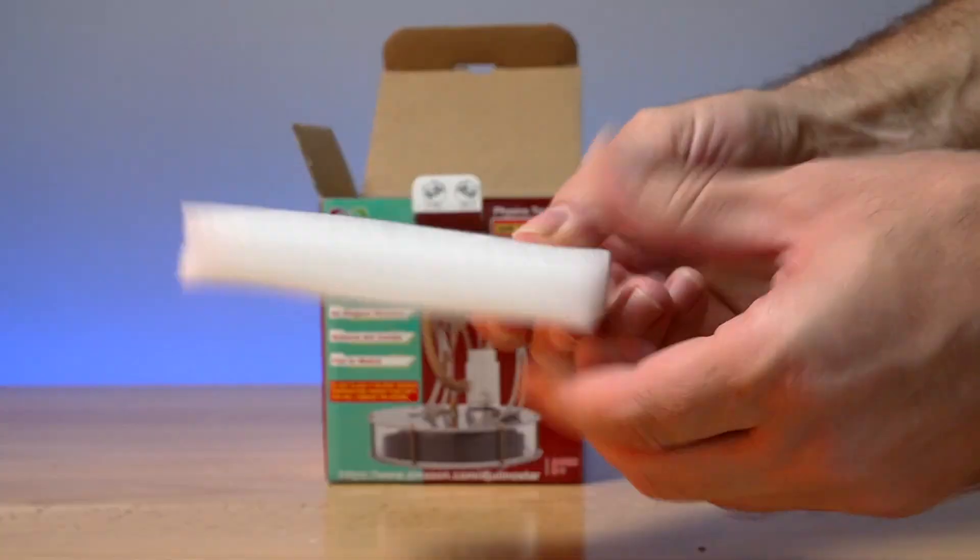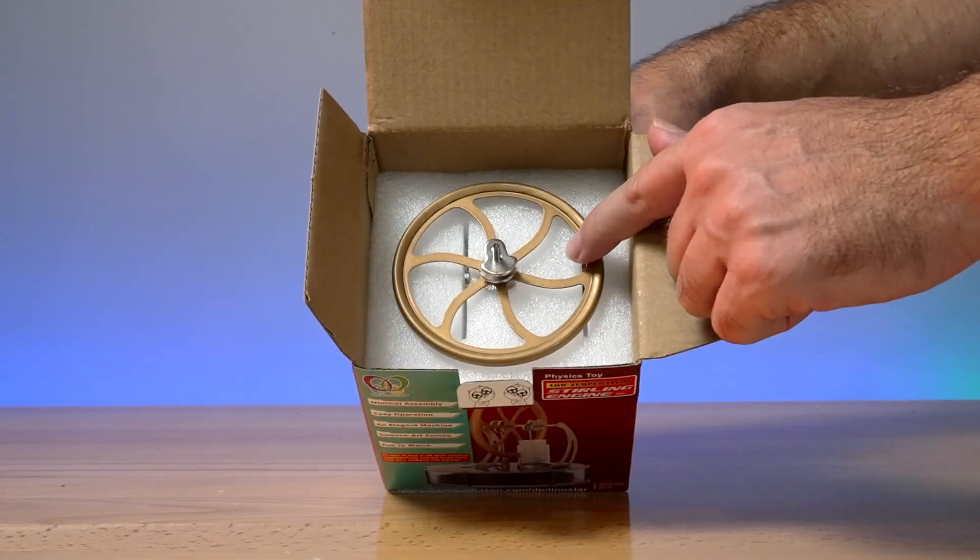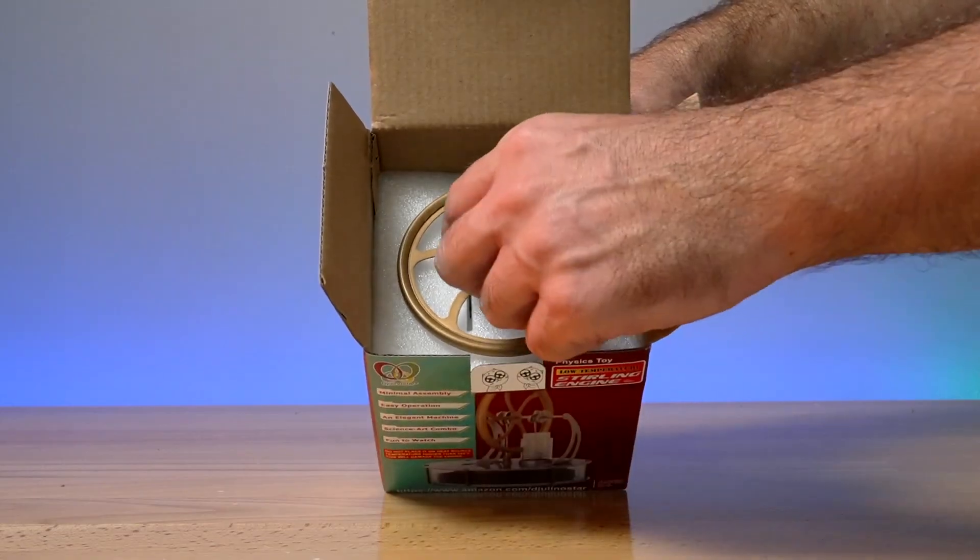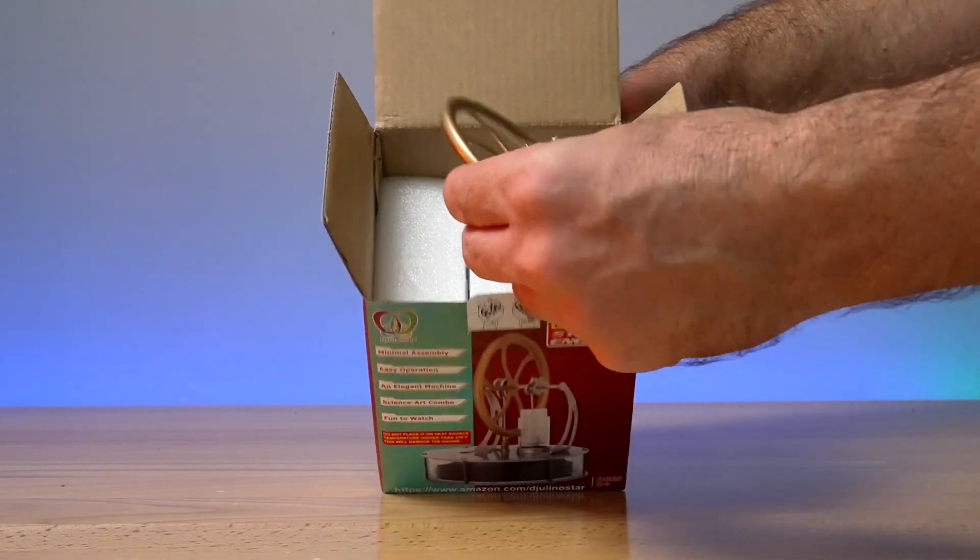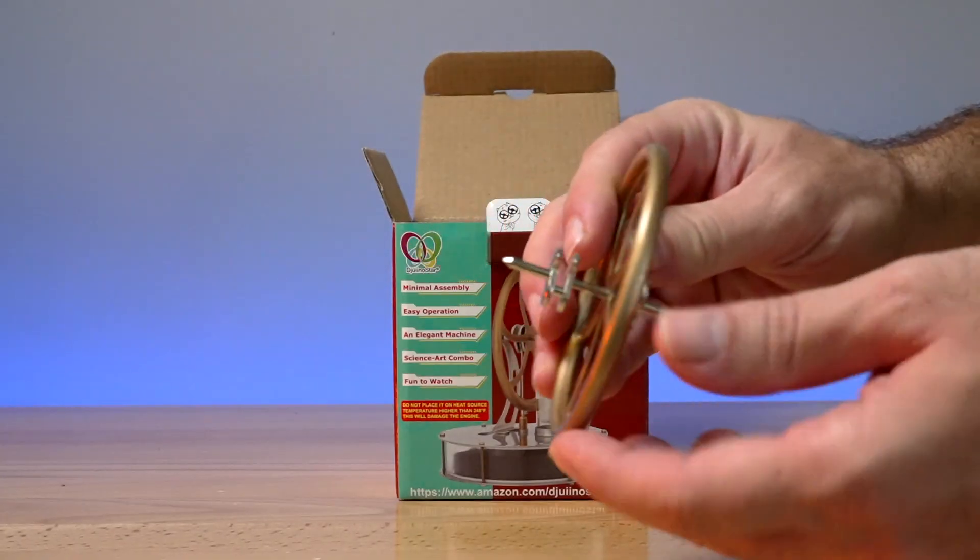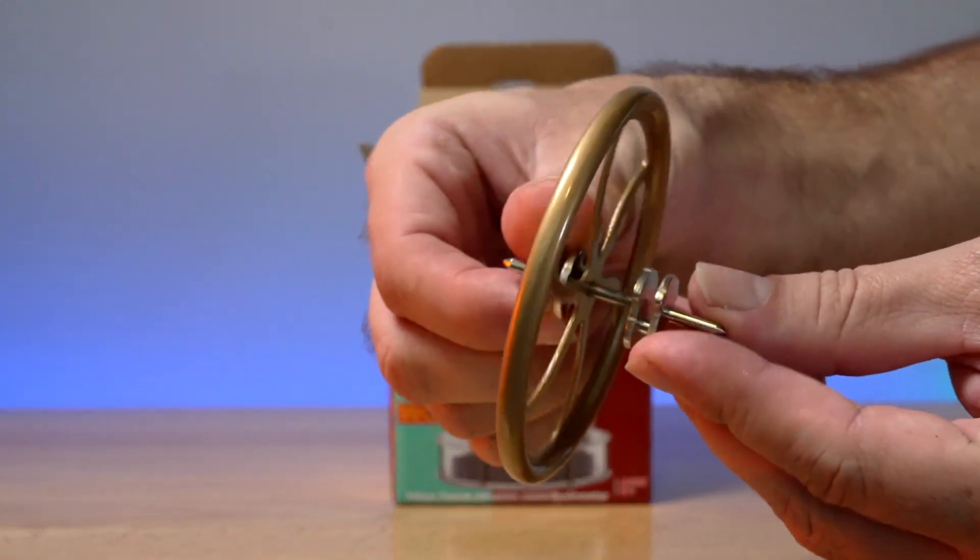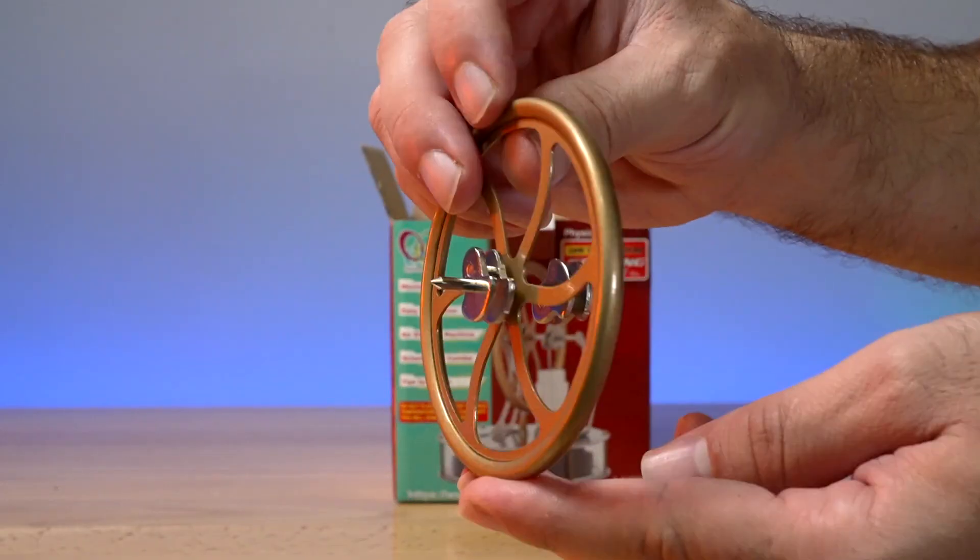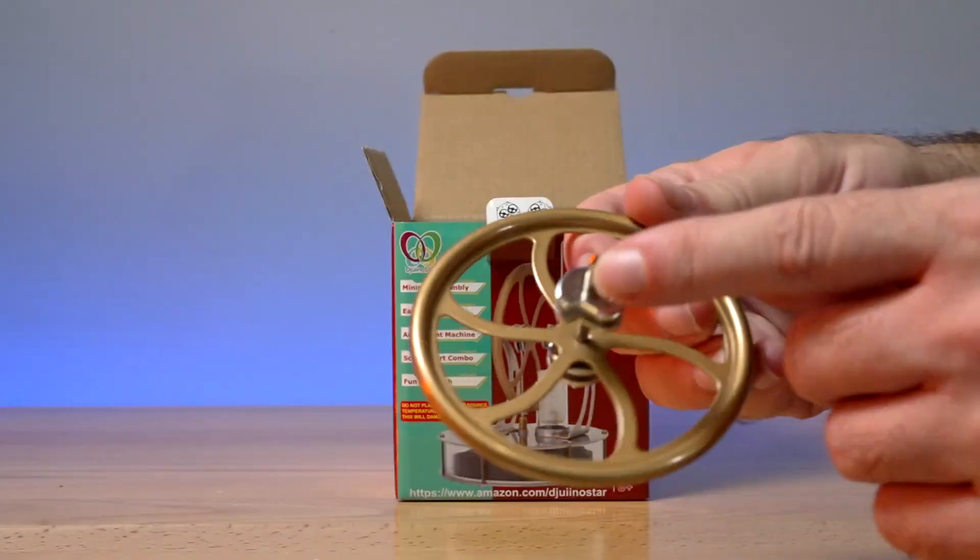Alright, so let's see what we got here. Soft foam, okay. The engine comes in pieces, so we've got the wheel here all by itself. It's quite heavy actually, and we can see the crankshaft design here on the flywheel connected to it. The craftsmanship does look pretty nice.